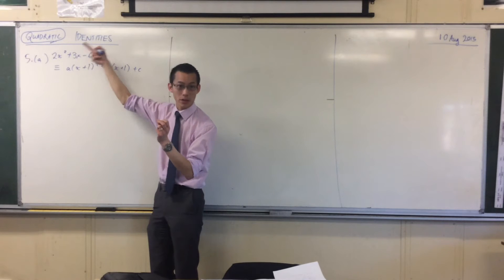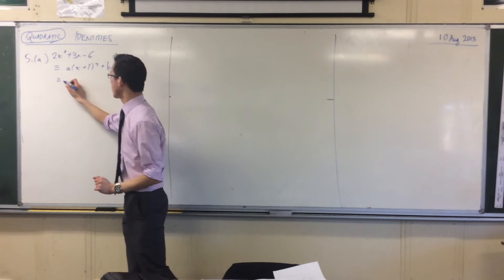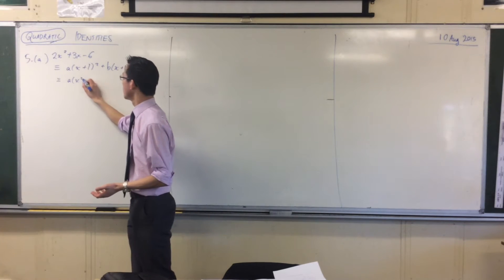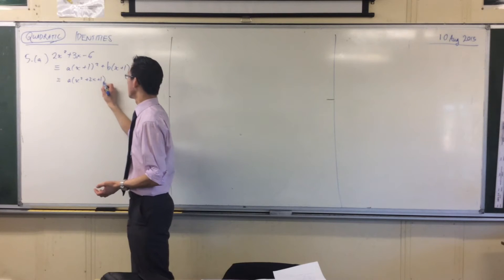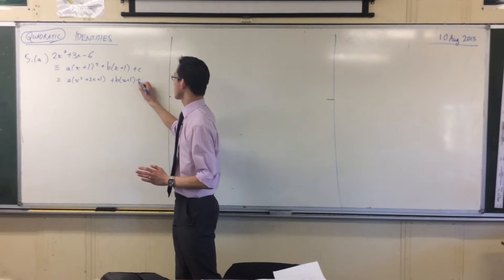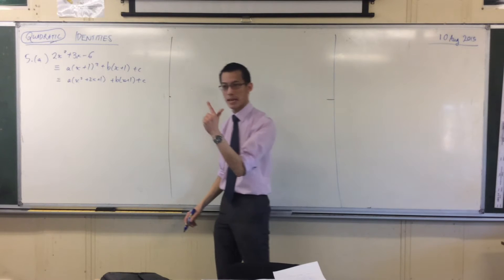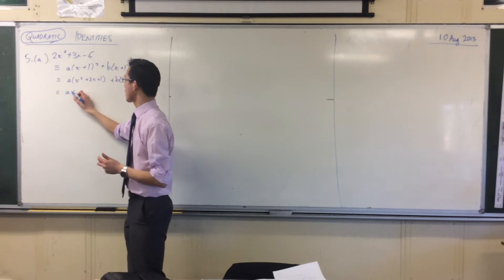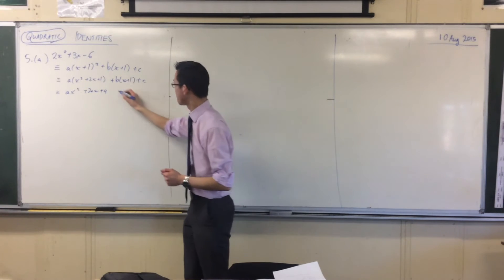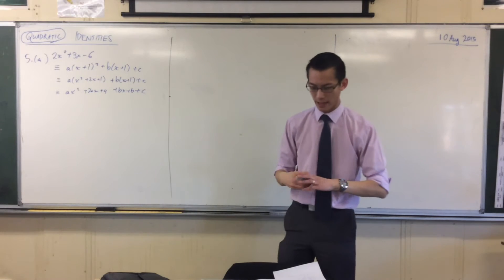Let's work with the right-hand side. It's not difficult to expand. I'm going to square x+1—it's a perfect square—so I'll get this. Now I can expand the whole lot, and I'm going to get a series of x² terms, x terms, and constants. I've got ax² + 2ax + a, plus bx + b + c.